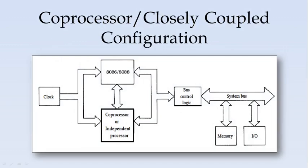This is the typical configuration for a coprocessor or closely coupled configuration, wherein the 8086 is the main processor or the host, and we have the additional processor which could be either the coprocessor or the independent processor. In this configuration we will have the coprocessor, which shares the same clock, the same bus control logic, and also shares the memory and IO space.